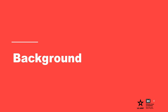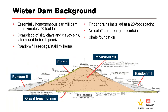Worcester Dam is owned and operated by the Corps of Engineers and is located near Worcester, Oklahoma. It is essentially a homogeneous embankment dam comprised of silty clays and clay silts with an average plasticity index of nine, which were found to be dispersive after construction. It has random fill seepage and stability berms upstream and downstream.